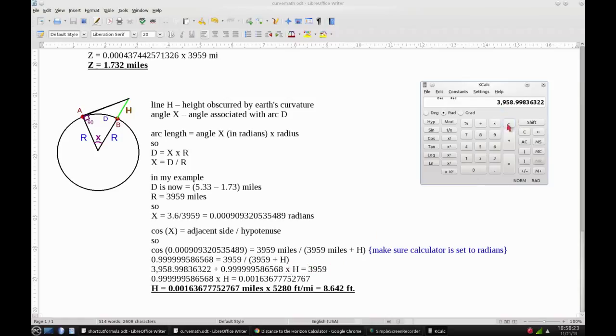So I'll subtract this number from 3,959, and I get this number. And if I divide that by the 0.9999586568, I get this number.